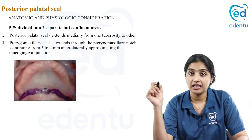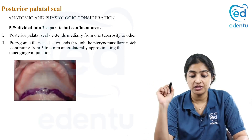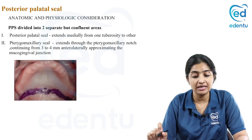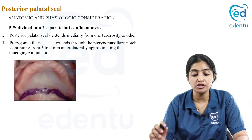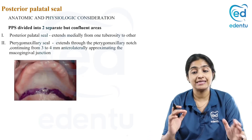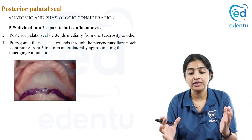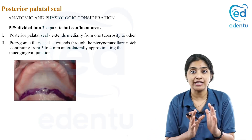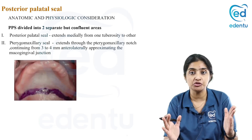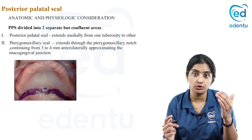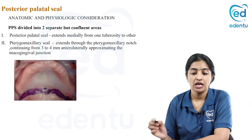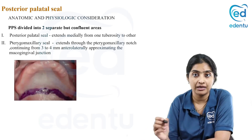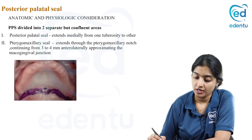Coming to the anatomic and physiologic considerations, the PPS can be divided into two separate but confluent areas. You cannot actually separate them, but just for the convenience of understanding the PPS, you can mark it as two areas.